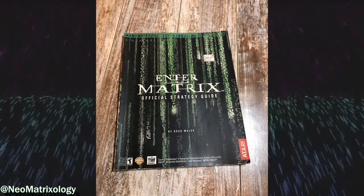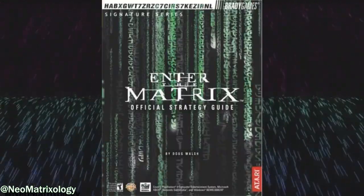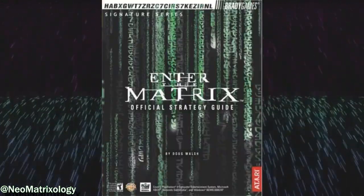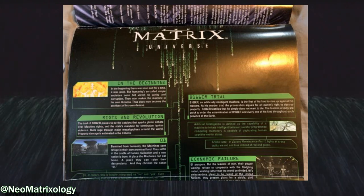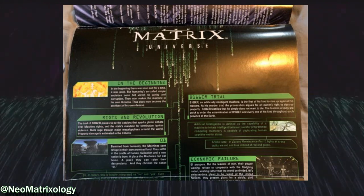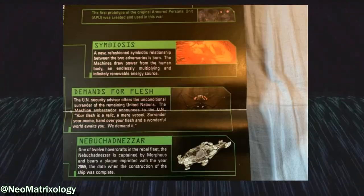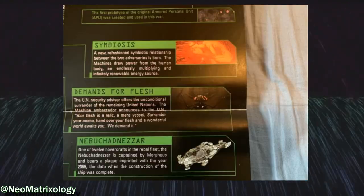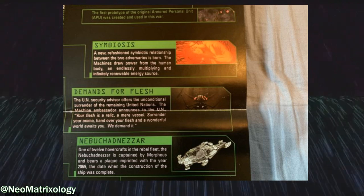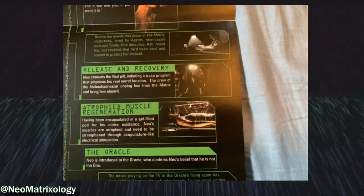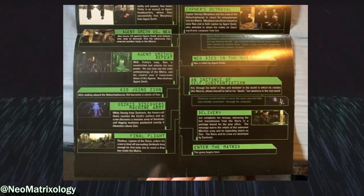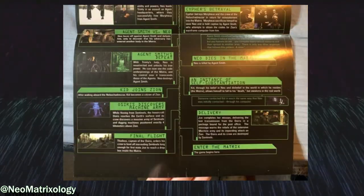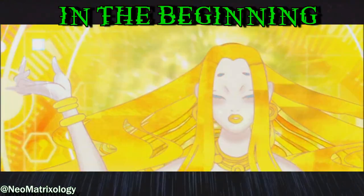A little-known fact within the Matrix fan community is that inside the Enter the Matrix strategy guide there is a Matrix Universe poster that outlines the events leading up to the start of the game. It mostly focuses on a few of the Animatrix episodes but also mentions scenes from the original film. For this video I'm going to present each block of information to you from that poster.